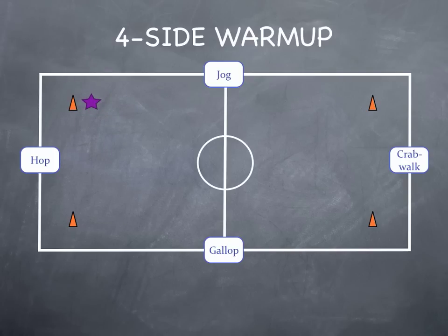What we'll do is we'll look at one student here. So when they're along the top, they'll do that action, the jogging. When they get to one side, they'll do crab walk, and at the bottom, they'll do some galloping, and when they get to the left side, they'll do some hopping.